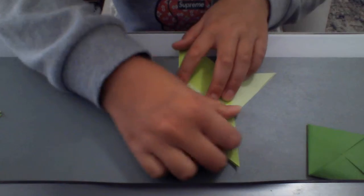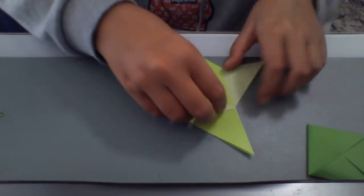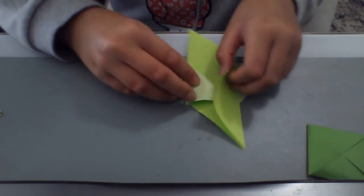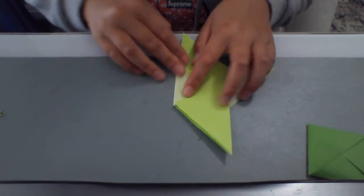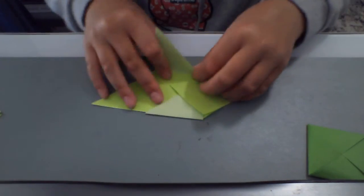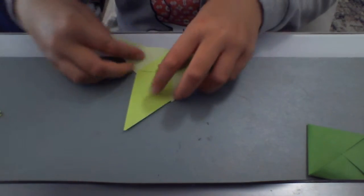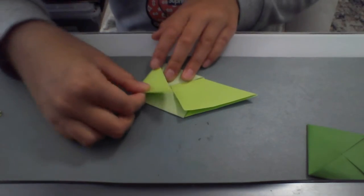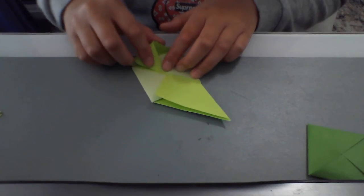And then once you have both of them, you can take the sides and fold it over. Pull it over like that. Put it in the flap.